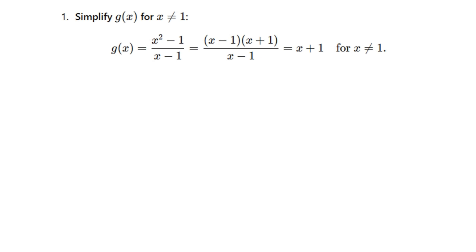As mentioned, the denominator is the major problem — at x equals 1 it gives us 0, making the function undefined. However, we can factorize the numerator: x² - 1 factors into (x + 1)(x - 1). Now there is a component of the numerator that cancels the denominator, so (x - 1) cancels (x - 1).